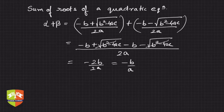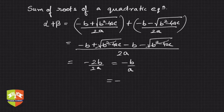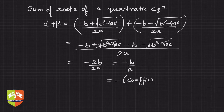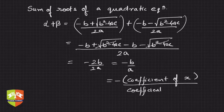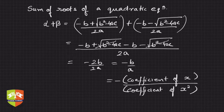This is a beautiful result. The sum of roots is simply minus the coefficient of x divided by the coefficient of x². So alpha + beta = -b/a, which can also be written as: sum of roots = -(coefficient of x) / (coefficient of x²).